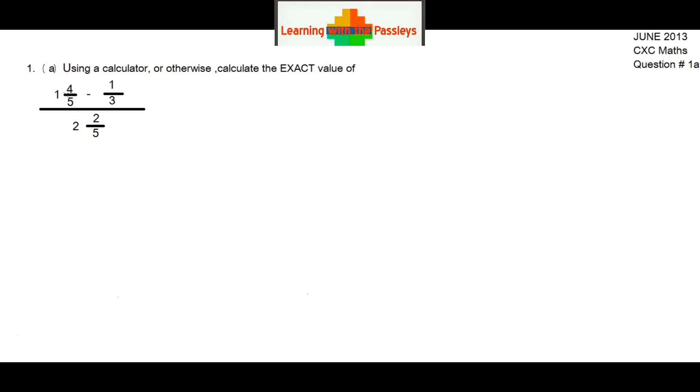Here we have the numerator and the denominator. We have some mixed fractions: 1 and 4/5 minus 1/3, all over 2 and 2/5. We're going to calculate this problem.